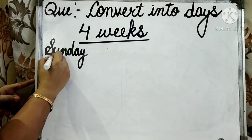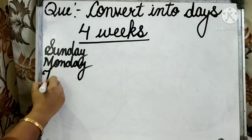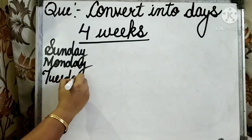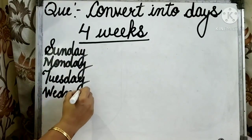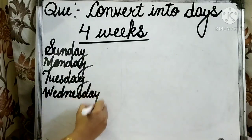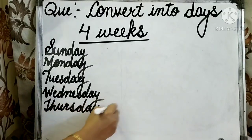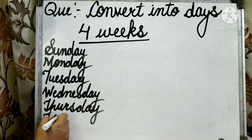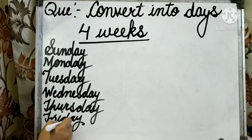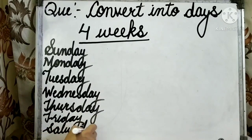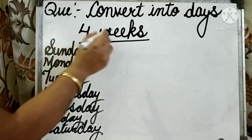Sunday, Monday, Tuesday, Wednesday, Thursday, Friday, and Saturday. So there are 7 days in 1 week.